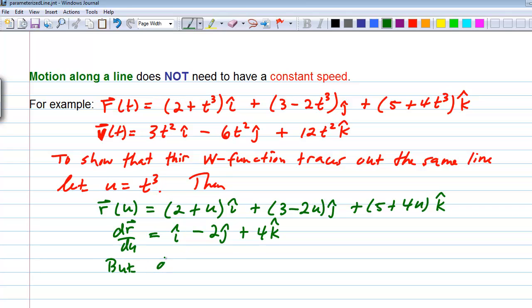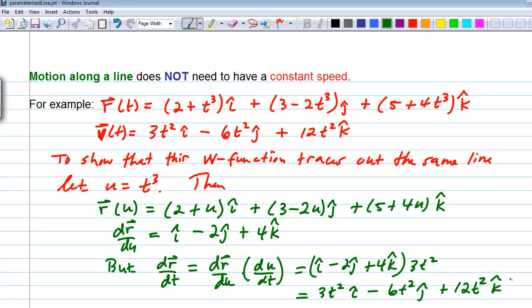But, if instead we wanted to find dr dt, we have to use the chain rule, and we'd get dr du times du dt. So, here we'd have the du's cancel, effectively, and dr du was i minus 2j plus 4k. We're going to multiply that by du dt, which du dt, in this case, is 3t squared. It's a scalar. And so, when we do that, we end up with 3t squared i minus 6t squared j plus 12t squared k. And we see that's exactly what we had up here for v of t, or r prime of t for that function.